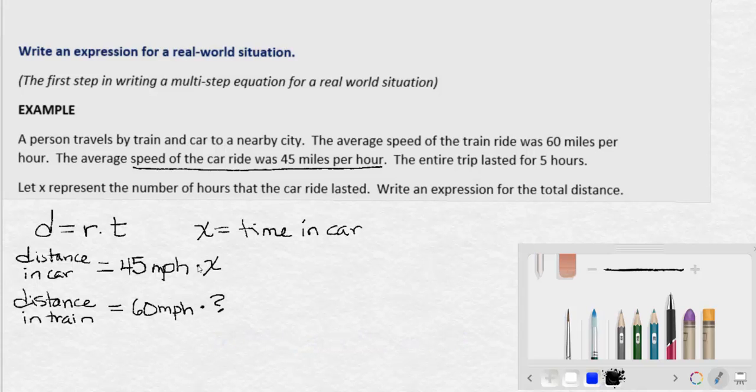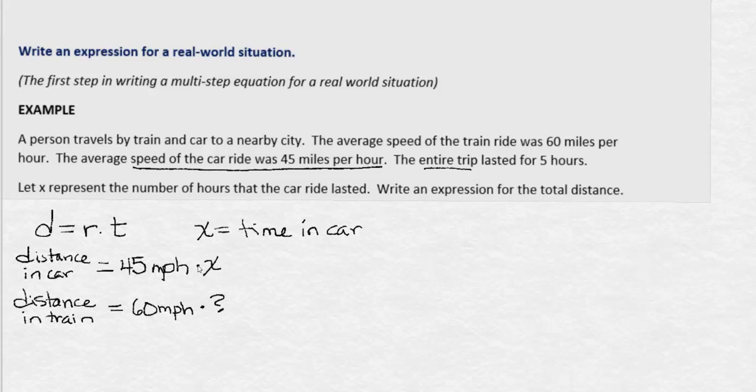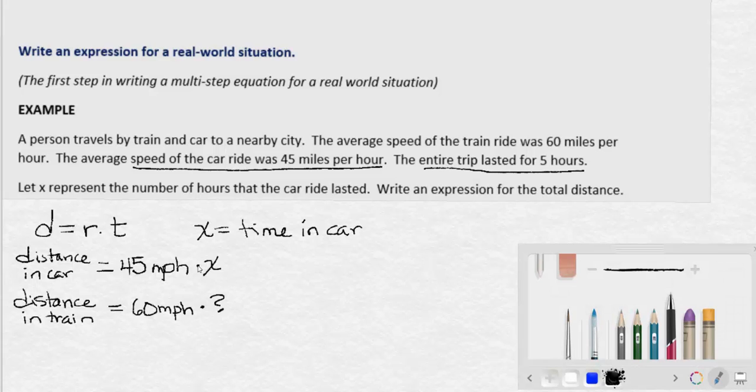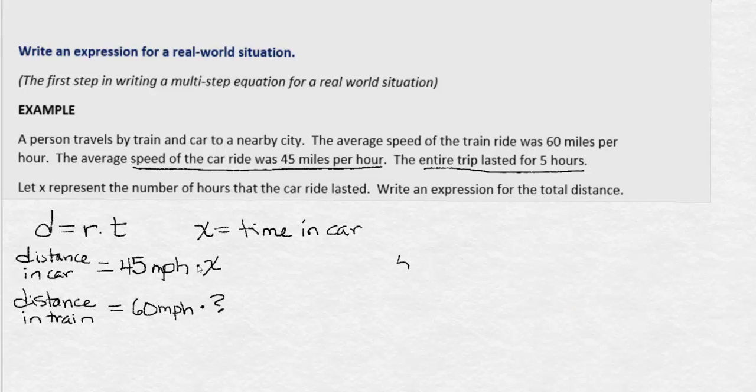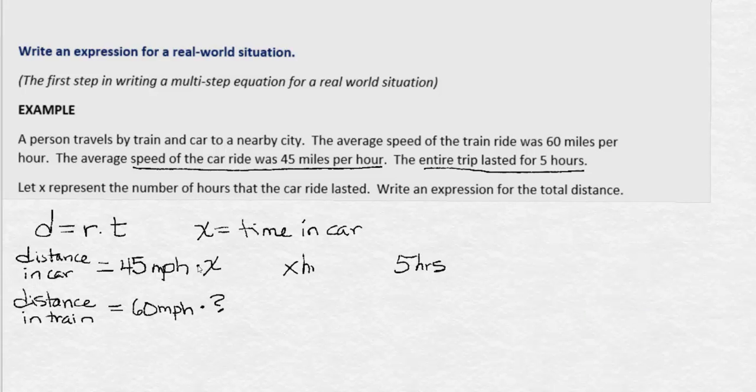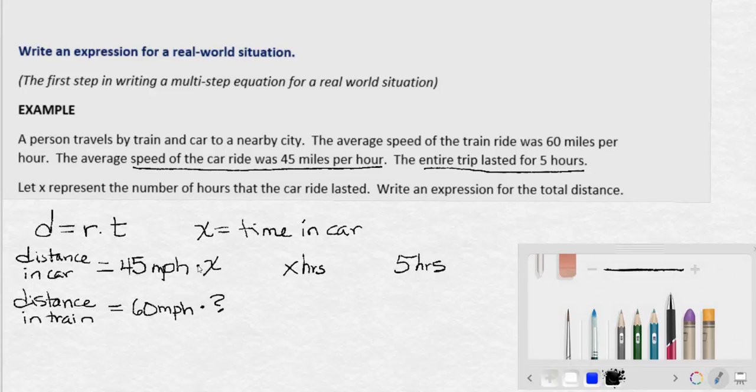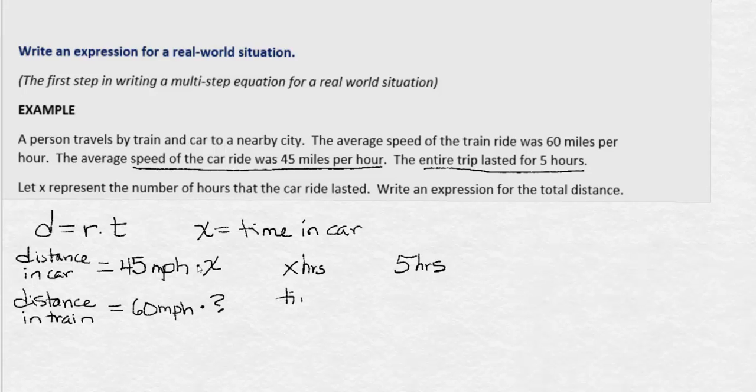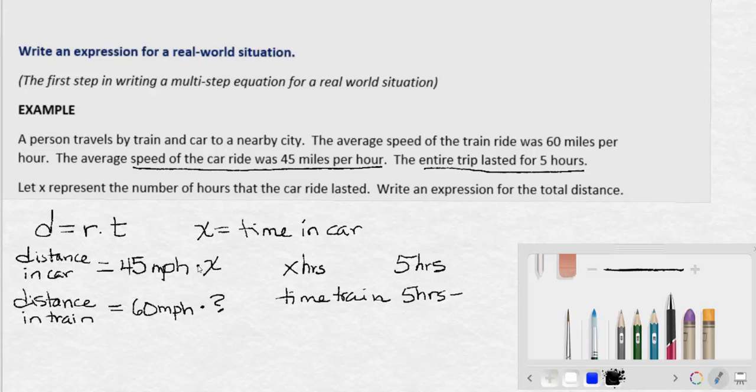So what do we know about the train ride that relates to the time in the car? Well, what we know that ties the two together is the time for the entire trip. The entire trip lasted for 5 hours. We know that we spent x hours in the car. So the time for the train is going to be 5 hours, the total number of hours, minus the amount that we spent in the car.